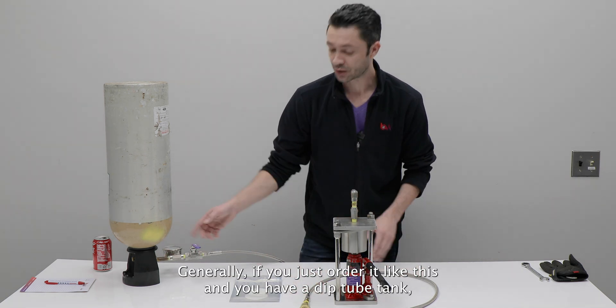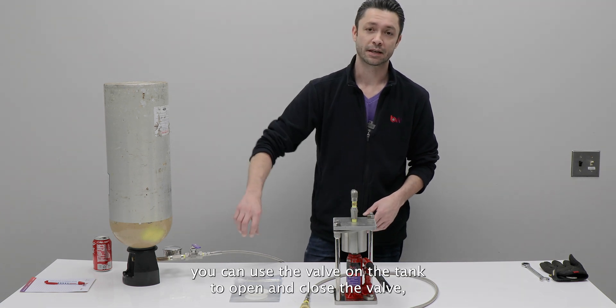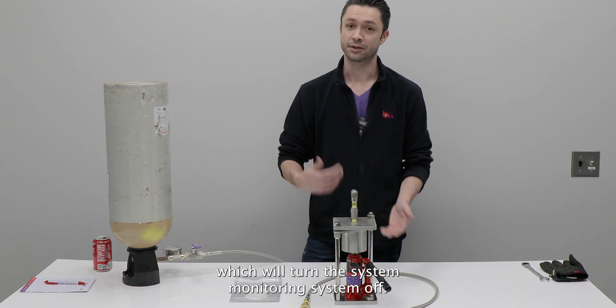Generally, if you just order it like this and you have a dip tube tank, you can use the valve on the tank to open and close the valve, which will turn the system on and turn the system off.